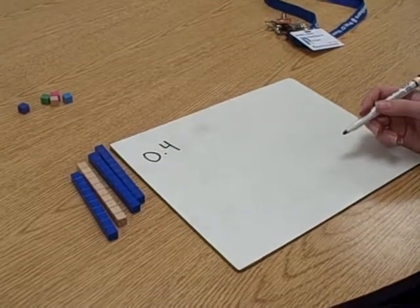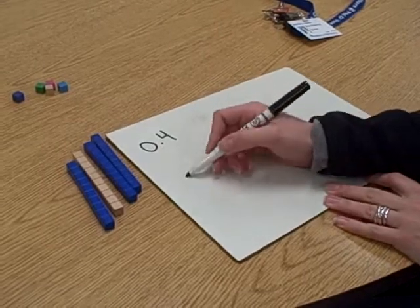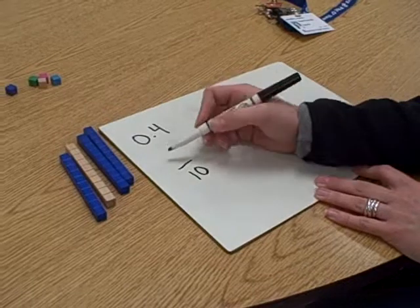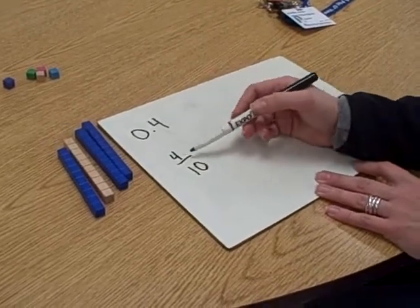To make that a fraction, we're going to listen to the name. We said it's zero and four tenths. So we know tenths is going to be our denominator and four, the number we have, is going to be our numerator. So zero and four tenths, four tenths.